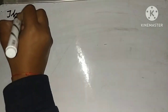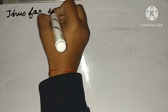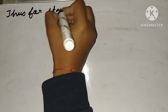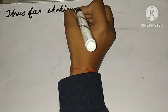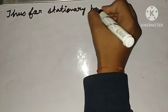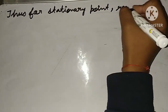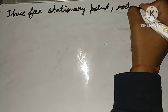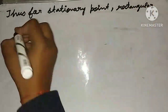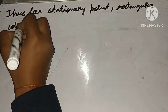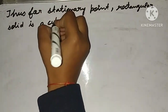Thus for the stationary distribution, we can see that the rectangular solid is a cube.